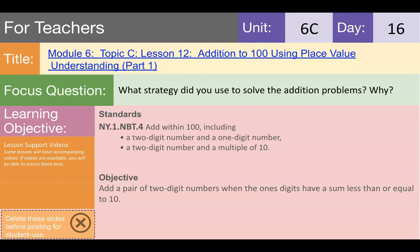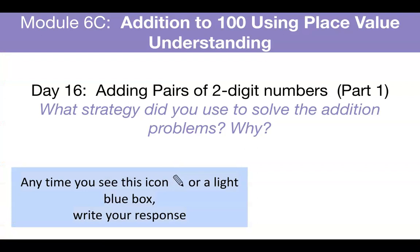And today I'm going to work on specifically a strategy where we are using number bonds and place value chart. So the objective is add a pair of two-digit numbers when the ones digits have a sum less than or equal to 10. So we are doing our addition to 100. We're moving ahead. We've been adding up to 40, and we are using place value understanding and number bonds to help us.